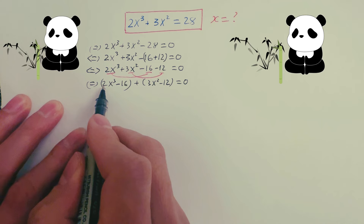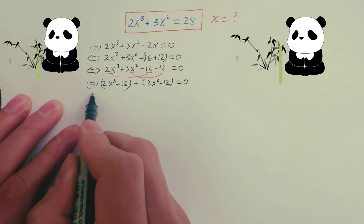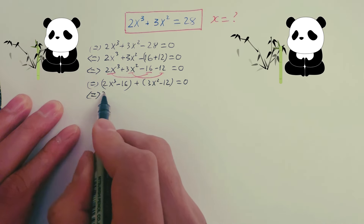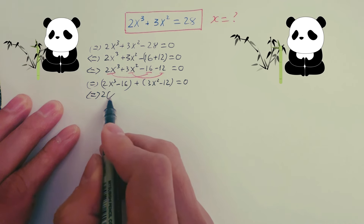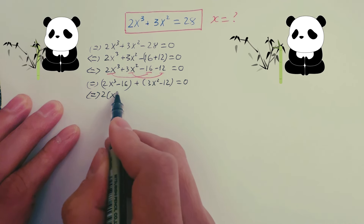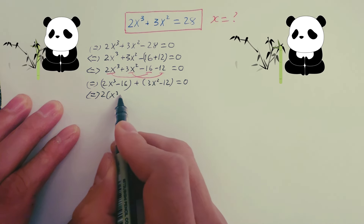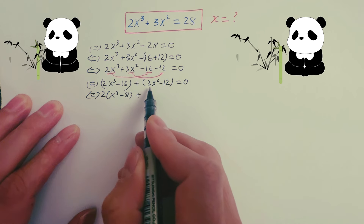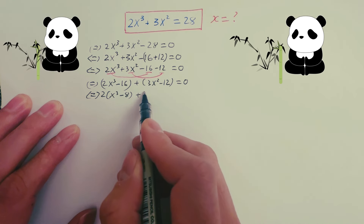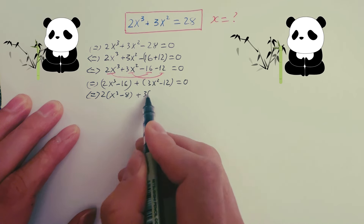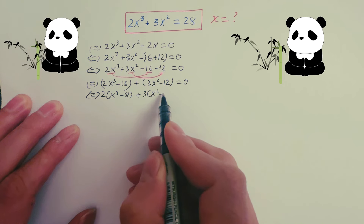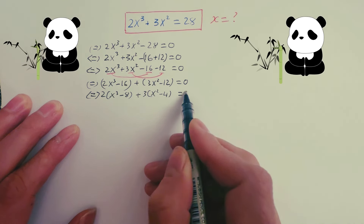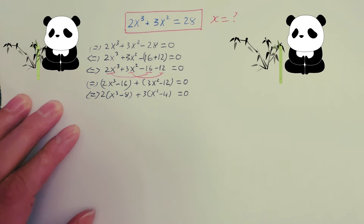Look here — 2 and 16: you can take out 2 outside the brackets, so inside the bracket you have x cubed minus 8. And here you can take out 3 outside the brackets, so inside you have x squared minus 4, equals zero.